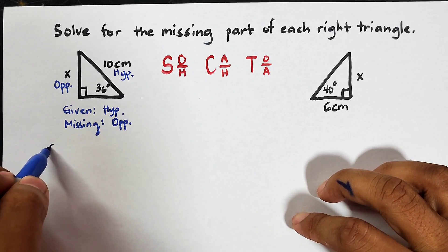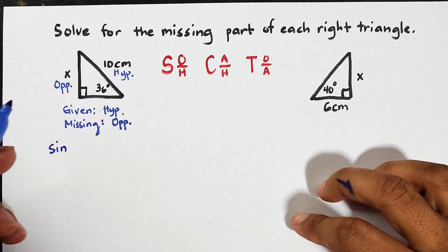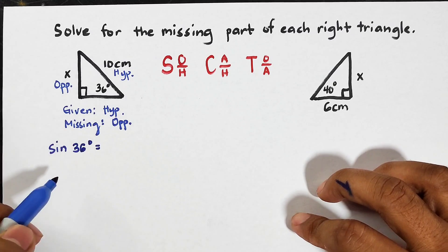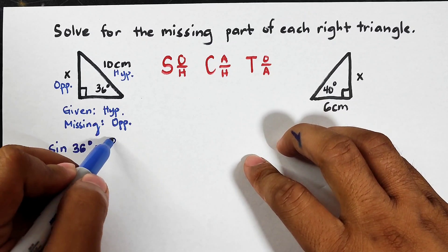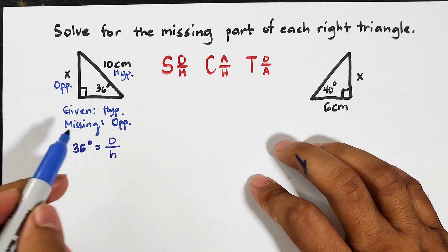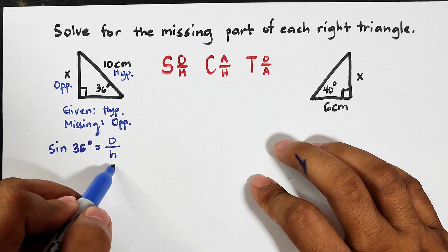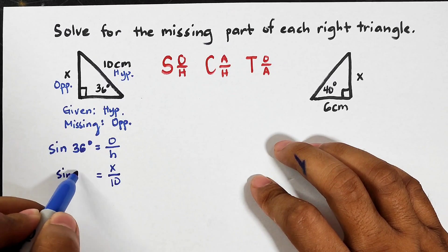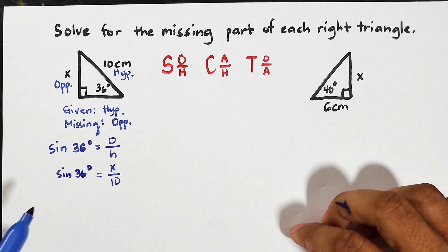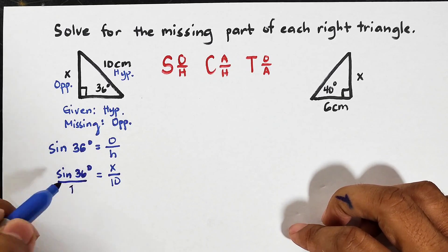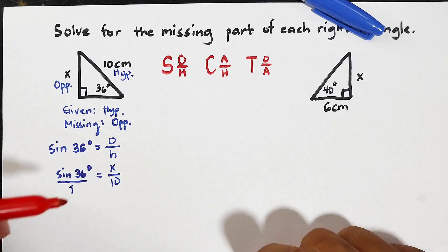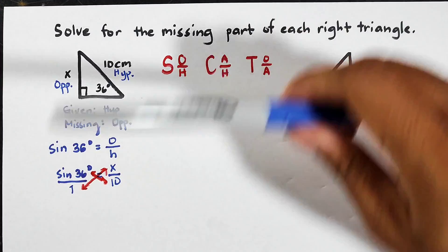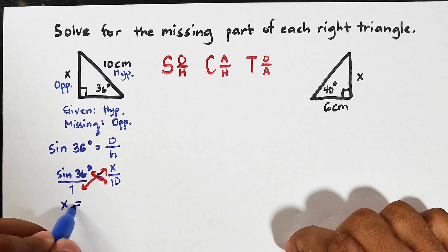We will use sine, and we copy the acute angle: sine 36 degrees. Our ratio is opposite over hypotenuse, so we substitute: sine 36° = x / 10. Next, we cross-multiply: 1 times x gives us x, and on the other side we have 10 times sine 36 degrees.